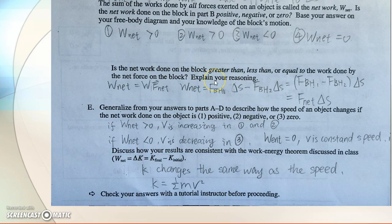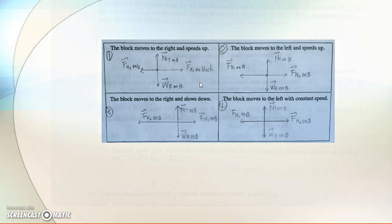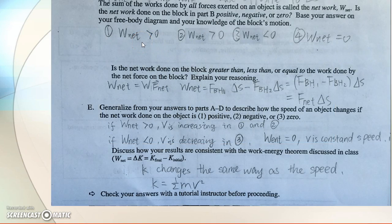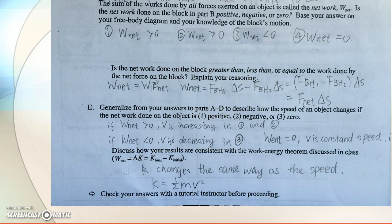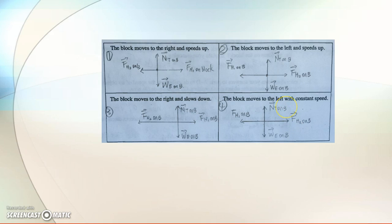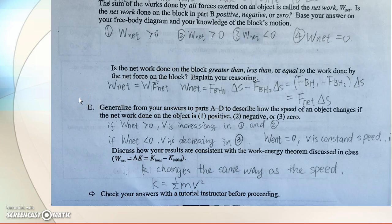The force from the block acting on hand 2 is negative work because it is opposite to the displacement S. Using the completed table: first, the block moving to the right and speeding up — net work is greater than zero. Second, the block moves to the left and speeds up — net work is greater than zero. Third, the block is moving to the right and slowing down — net work is less than zero. Fourth, the block moving to the left with constant speed — net work equals zero.